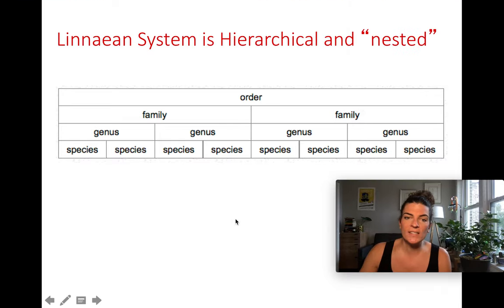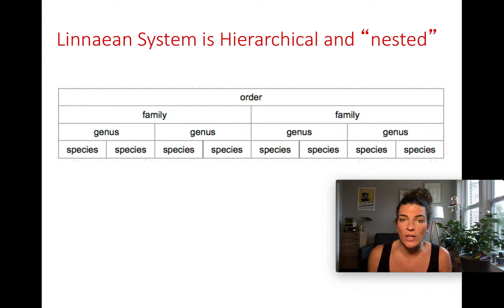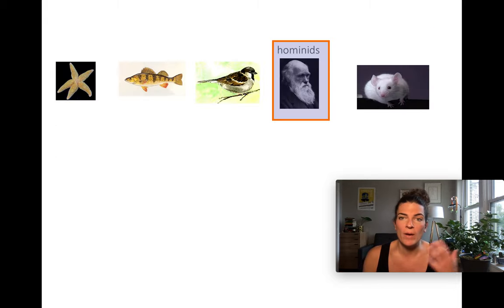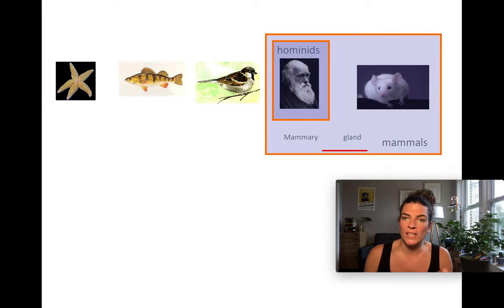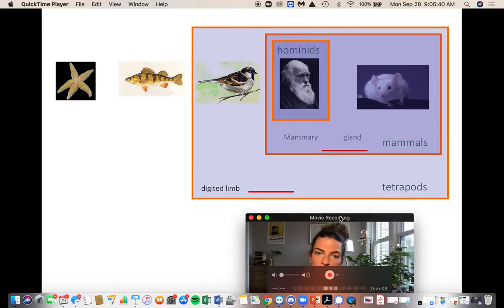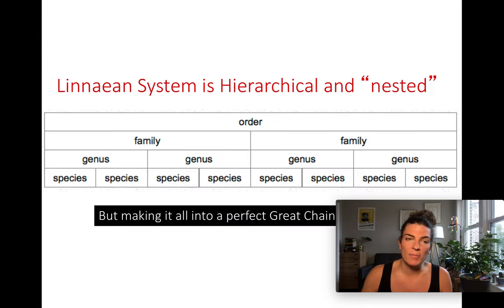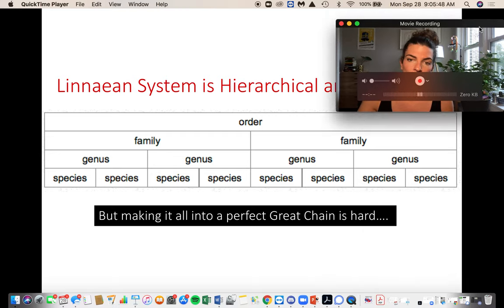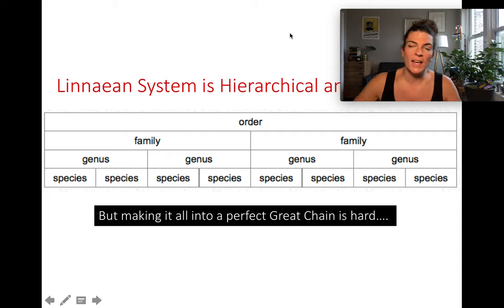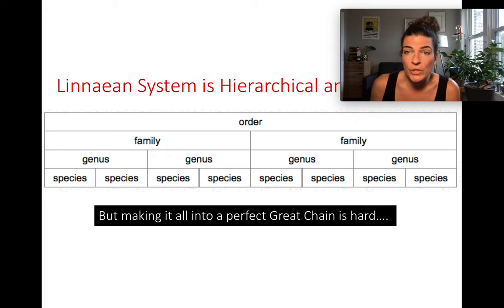While his system did start to separate things and note that species are distinct from each other, it was still hierarchical and nested, still ascribing to the great chain of being — where humans are related to mammals because of their glands, which are related to birds because they have digited limbs, which are related to fish because they have backbones. But once he nested all these species classifications in this hierarchy, he found it excruciatingly difficult to make it into a perfect great chain. It didn't make sense, and he kind of just gave up there.